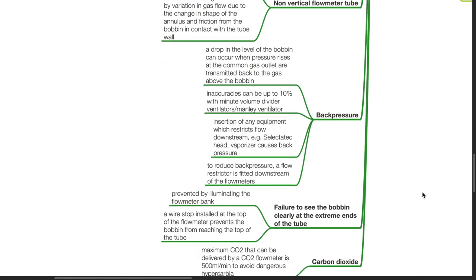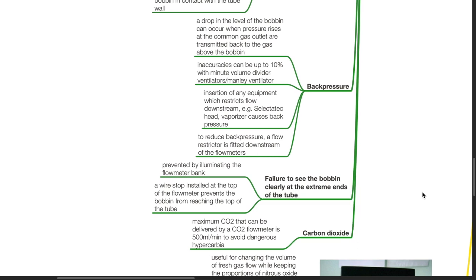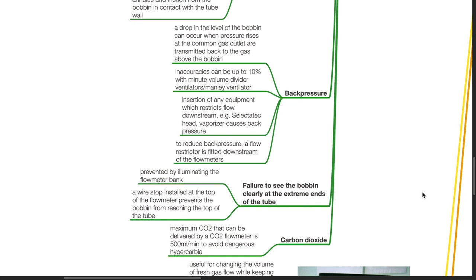Back pressure: A drop in the level of bobbin can occur when pressure rises at the common gas outlet transmitted back to the gas above the bobbin. Inaccuracies can be up to 10% especially with minute volume divider ventilators or Manley ventilator.